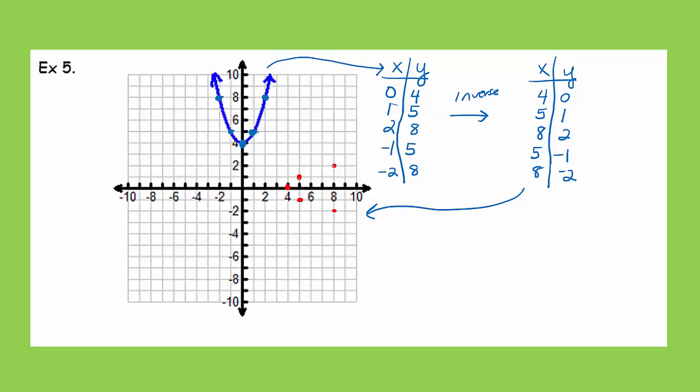So, this is reminding me that inverse relations are called inverse relations because they're not always functions. And you'll notice, right here, this would fail the vertical line test. There's more than one output at this input of 5. There's more than one output at this input of 8. So, right here, this sideways parabola is what that's called, would not be a function, which is why we call this a relation.